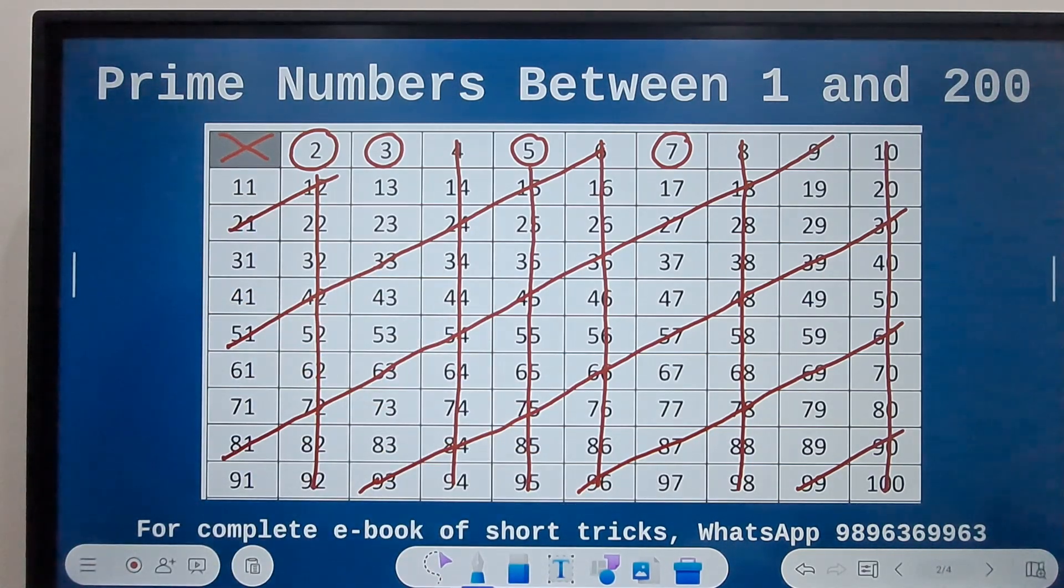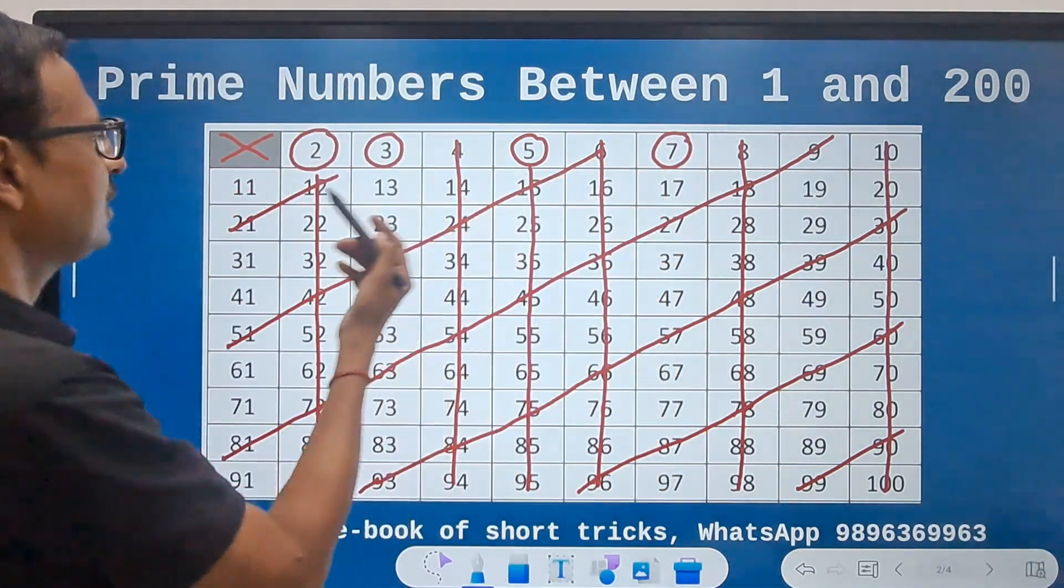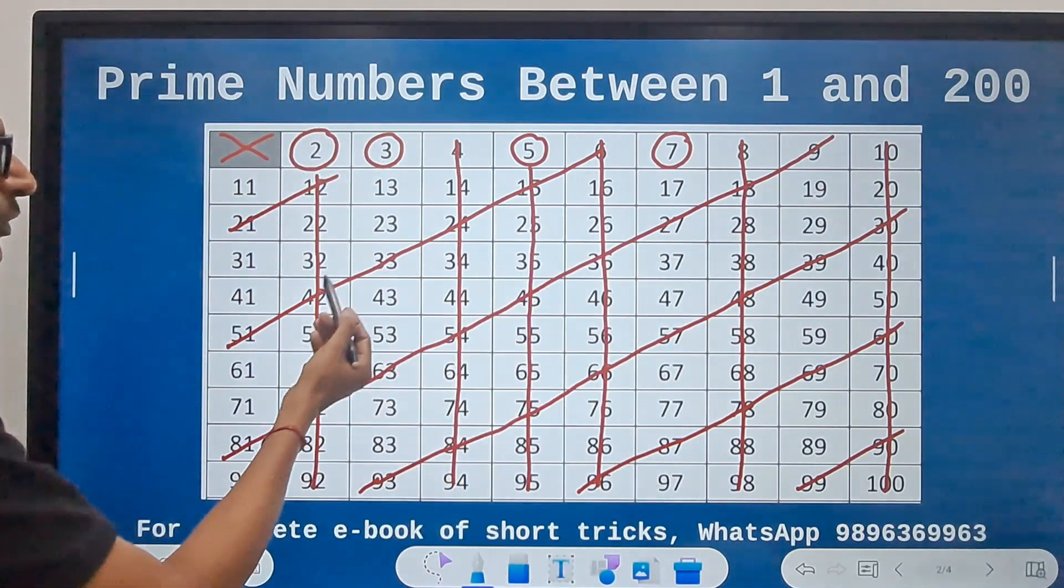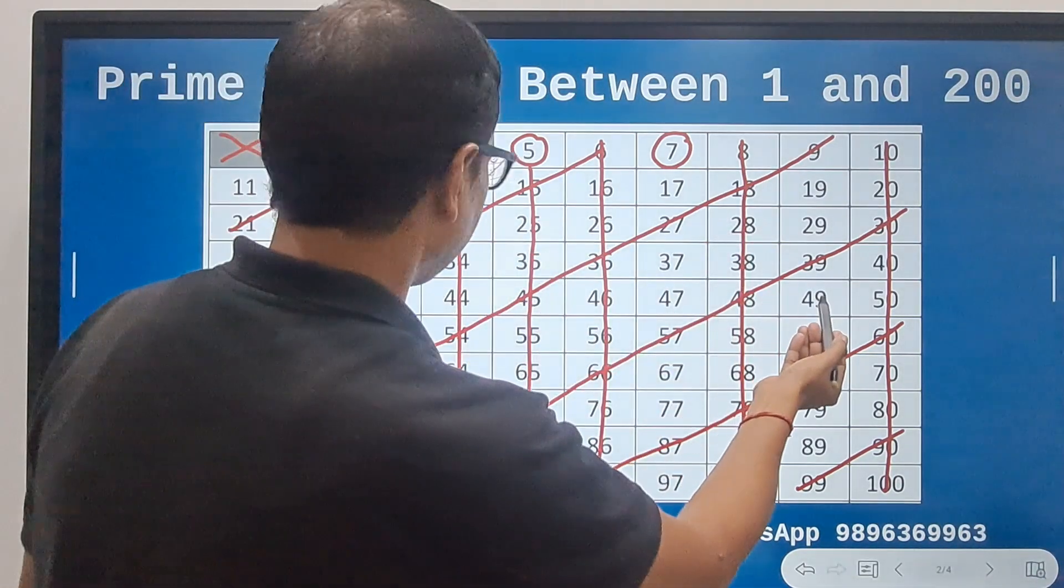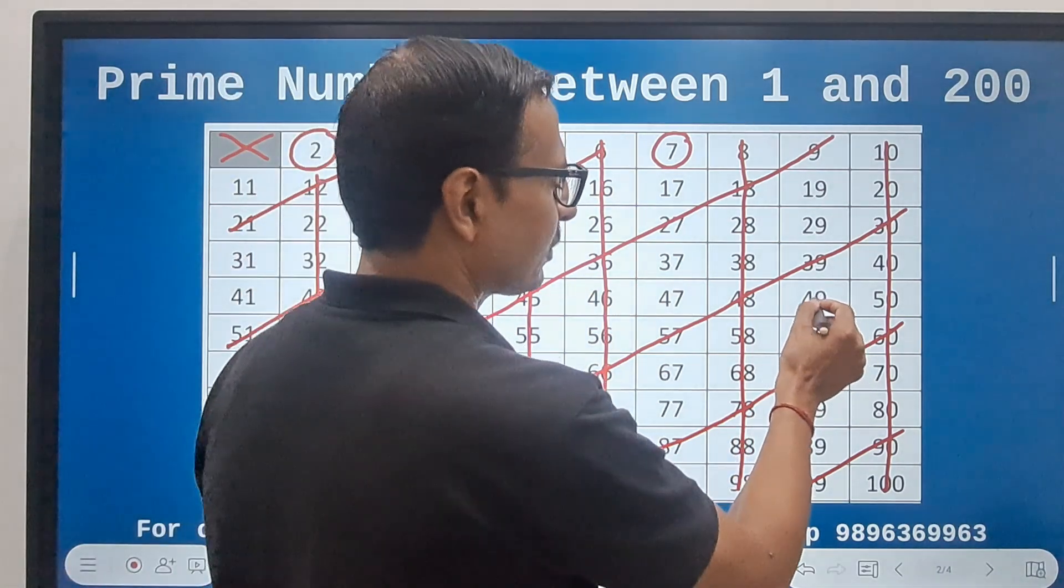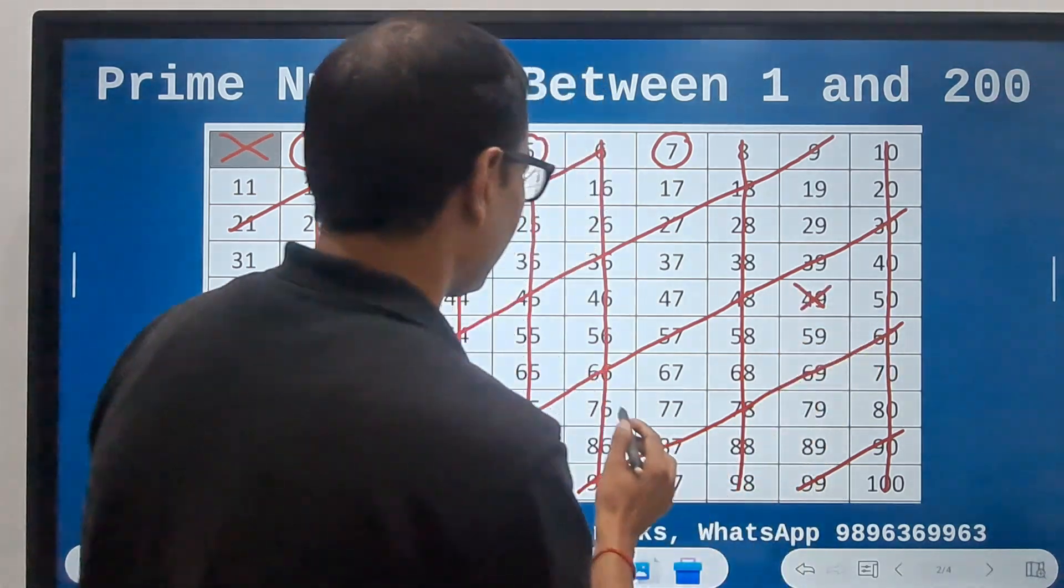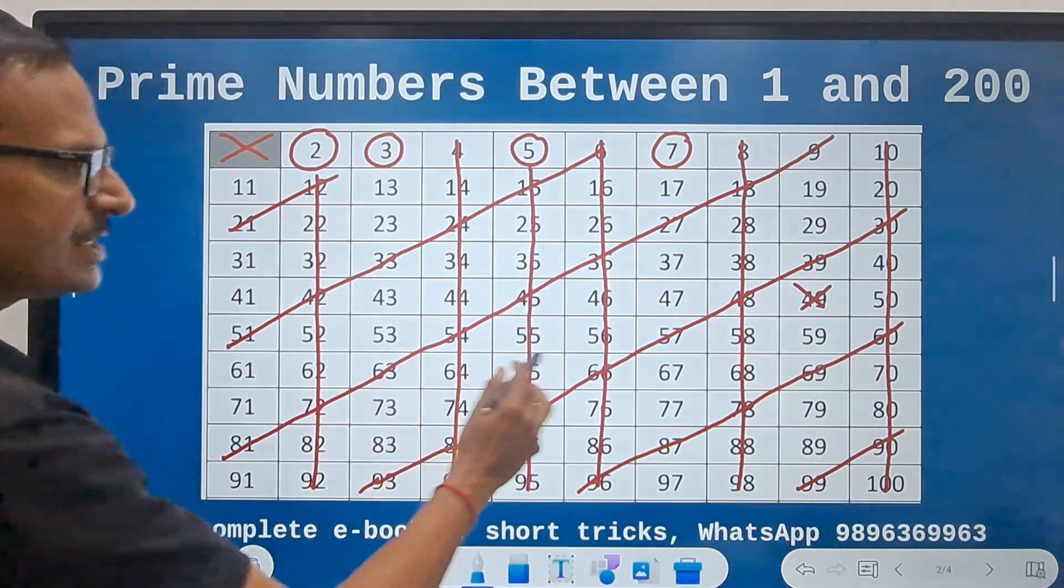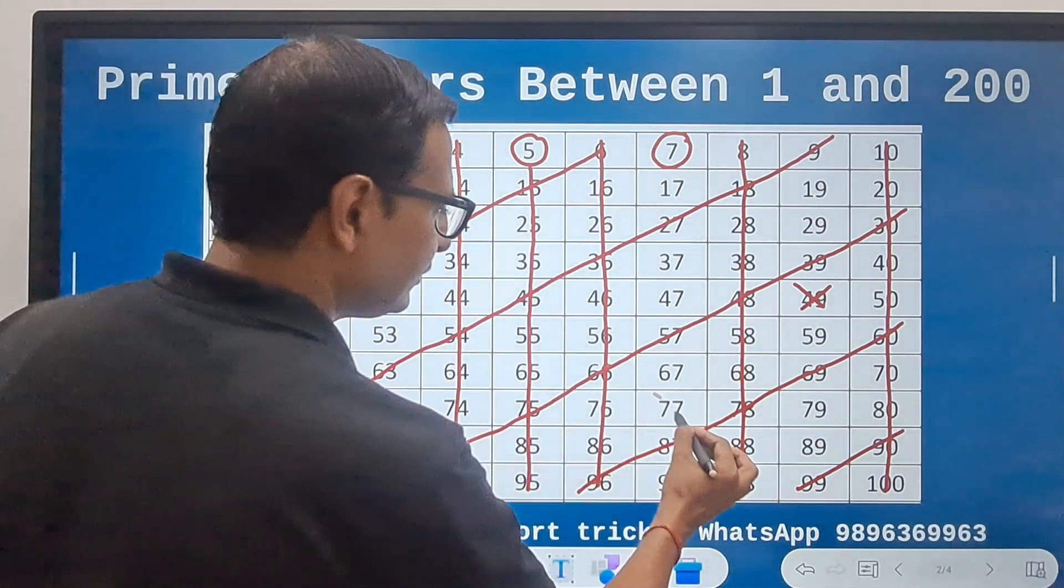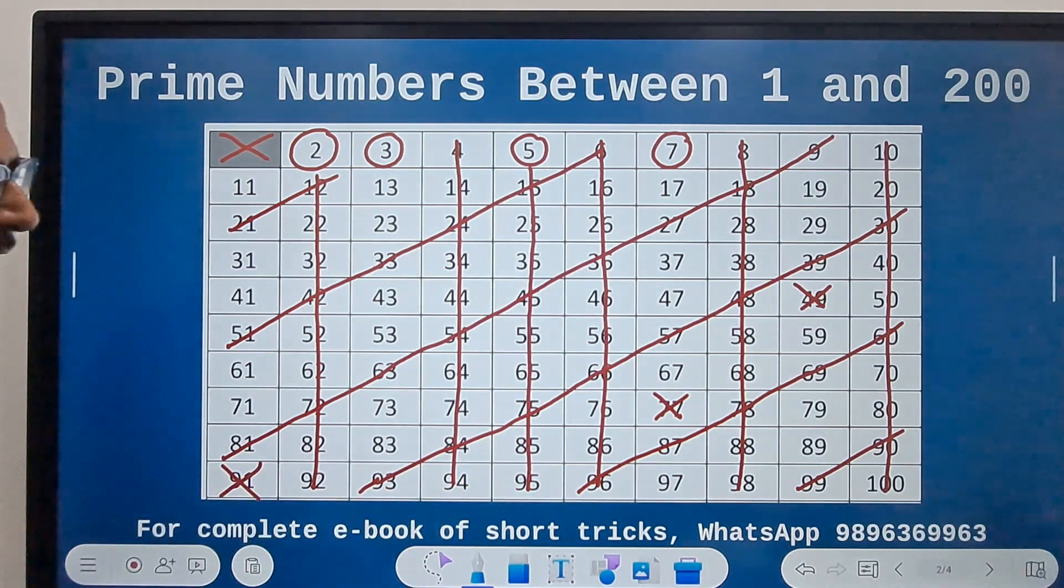And likewise we have the multiples of 7. So 7, 14, 21, 28 if there is any, let's check 35, 42, and then 49. 49 is not prime because it is a multiple of 7. So let's rule this out. Then 56, 63, 70 they are all ruled out. Then 77, 84, and then 91, and then 98.